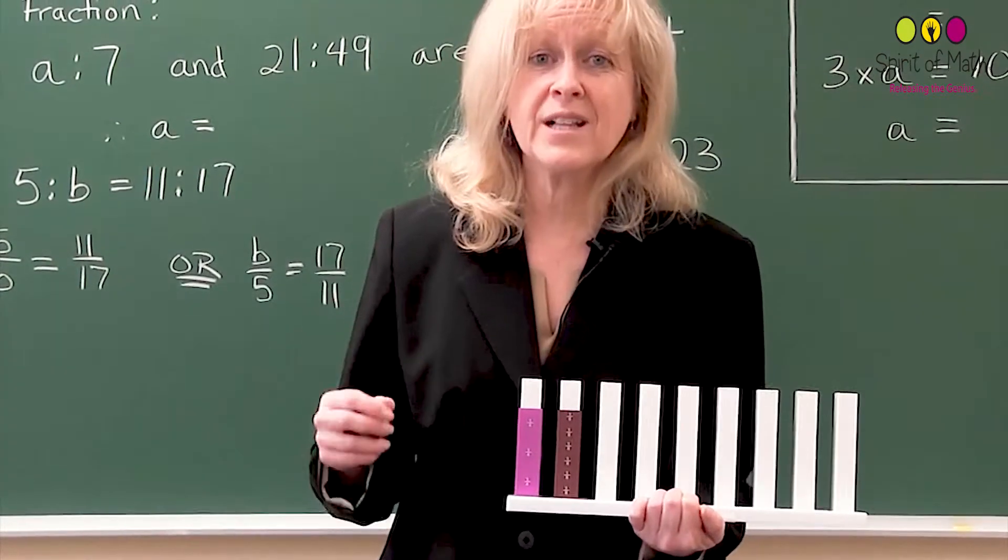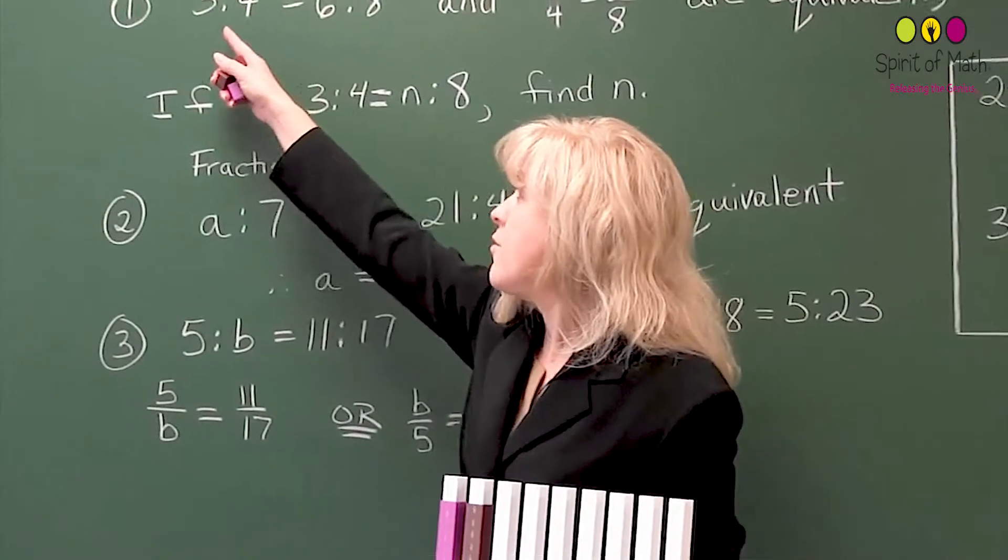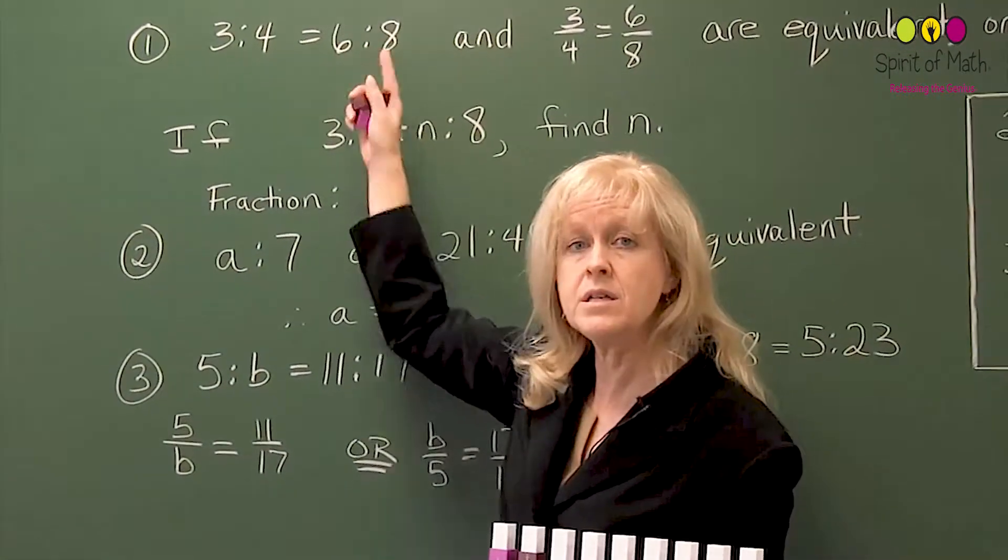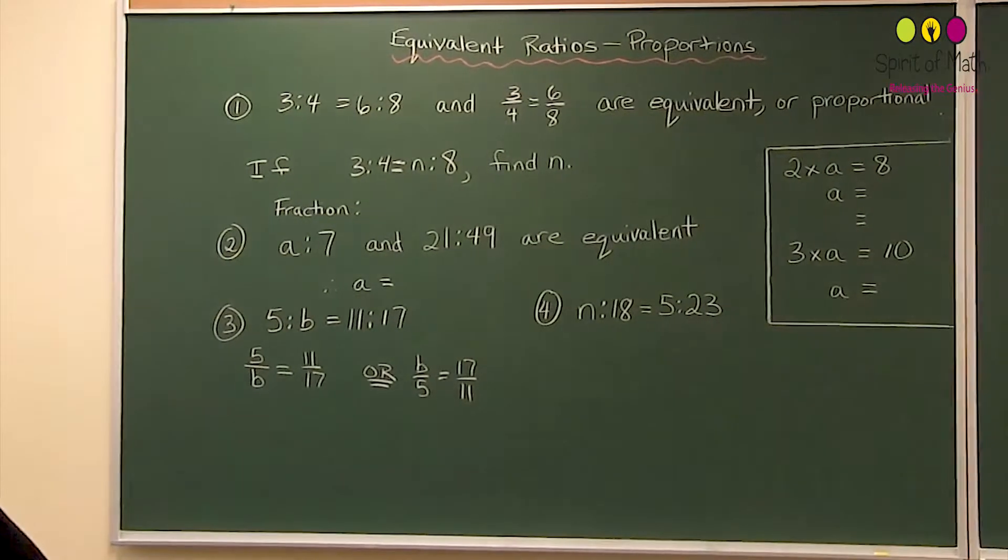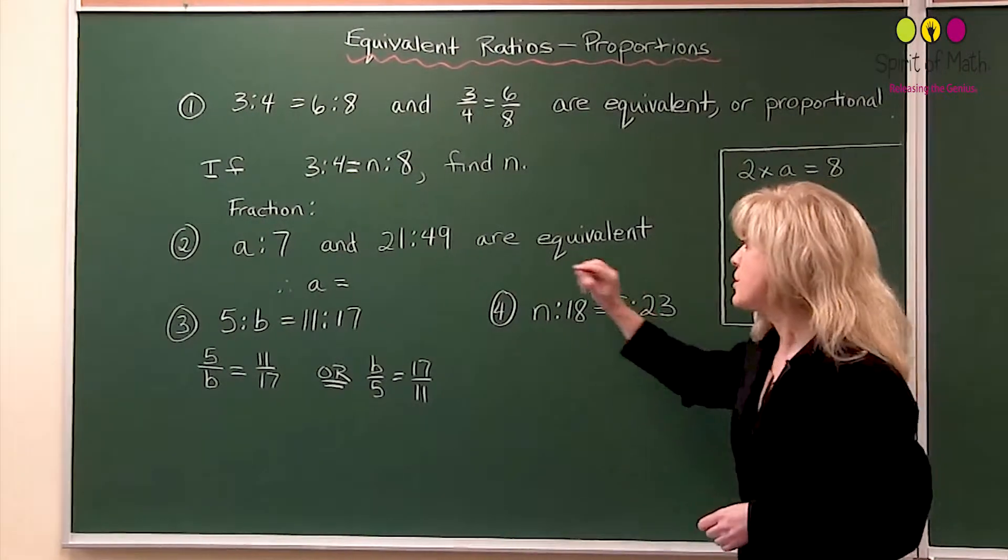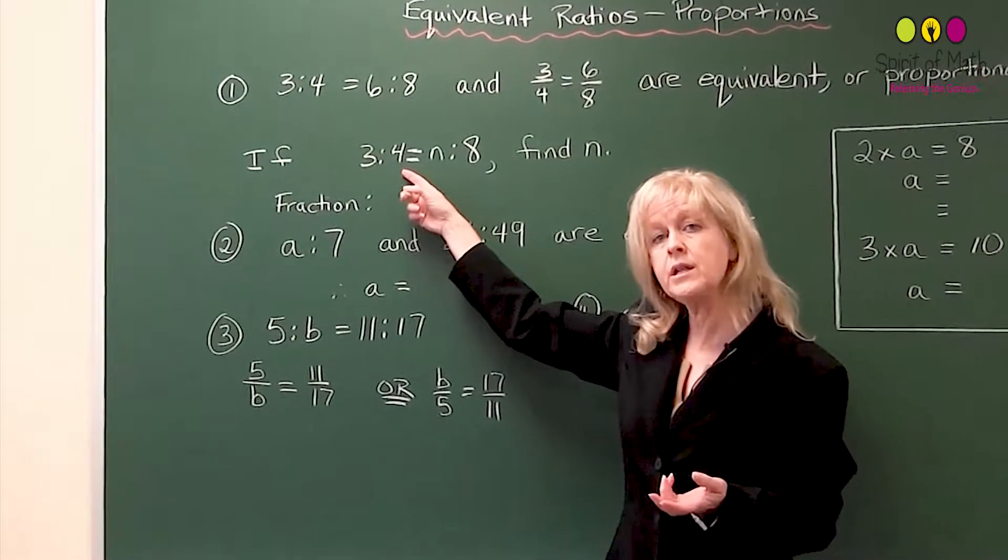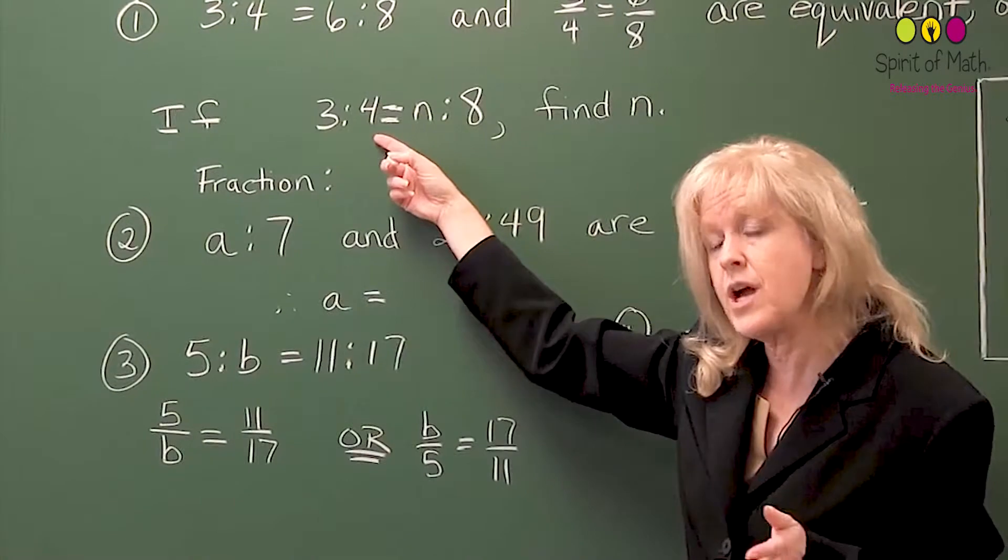Ratios, therefore, work exactly the same way where you have here. Three to four is equivalent to six to eight. It's just a different way of writing it. Now, they're equivalent or proportional. So if three to four, I'm going to just do a quick little example. You already know the answer to this, but I'm going to show you how to figure it out.